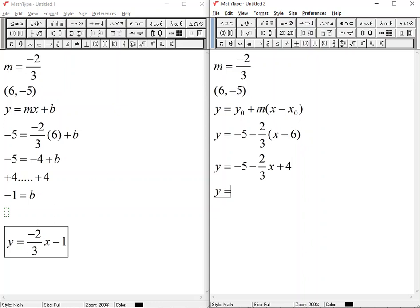And combined like terms, I'm going to keep the negative 2 thirds x, just put that first. And when I combine my like terms with negative 5 plus 4, I get negative 1. And again, this is the equation of the line.